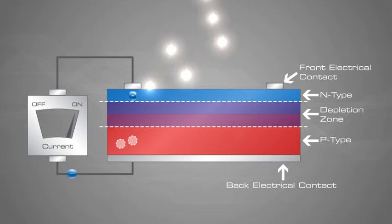As the electron enters the P-type silicon from the back electrical contact, it combines with the hole, restoring the electrical neutrality.